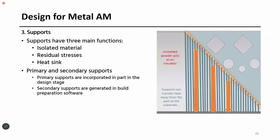We know supports are very important. There are three kinds of supports: mainly you use supports for overhangs — if you want to print overhangs, you need support structures. You can also have support structures to reduce or avoid residual stresses in 3D printed parts.